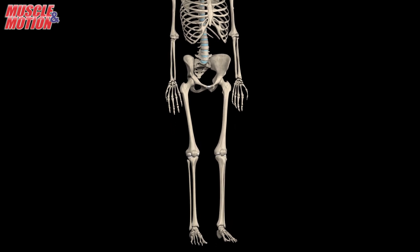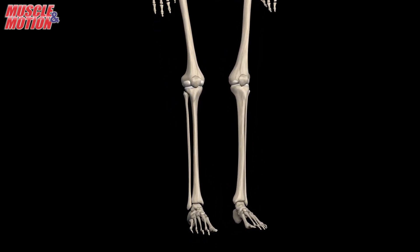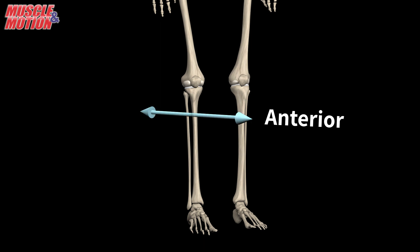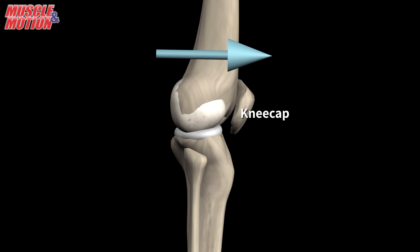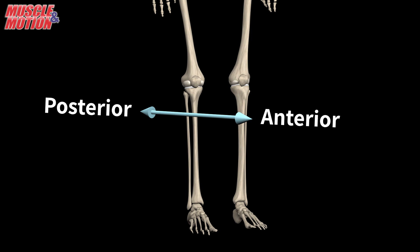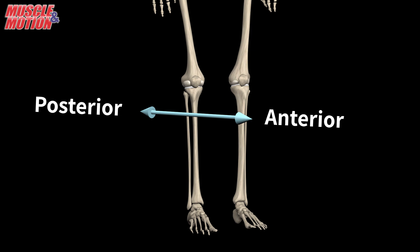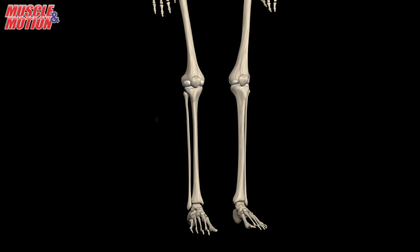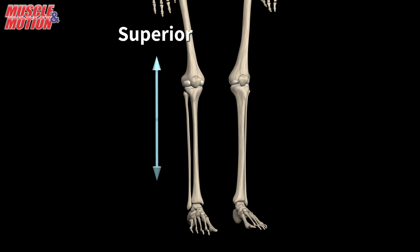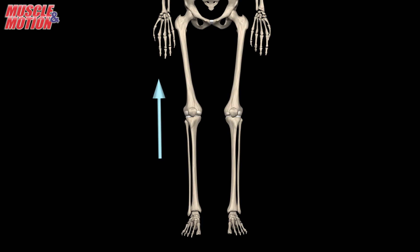First, let's define the relevant anatomical terms to help us understand the knee joint anatomy and function. Anterior means forward, or on the front of the body — for example, the kneecap is located anterior to the femur. Posterior means towards or on the back of the body, behind. Superior means towards the head or upper part of a structure, above — for example, the femur is superior to the tibia.